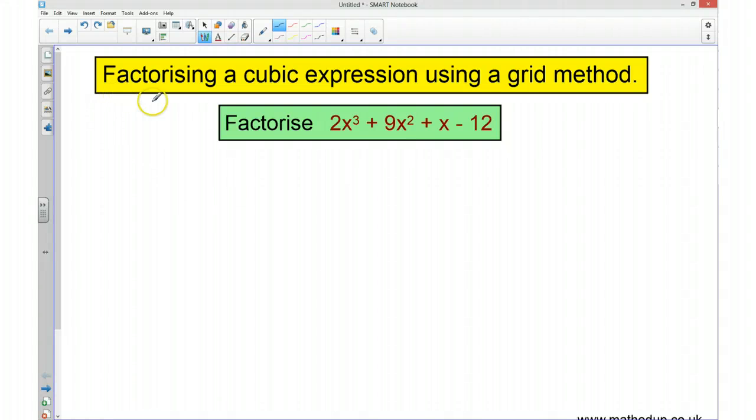Hi, this is a quick video on factorising a cubic expression using a grid method. We're going to have a look at factorising 2x cubed plus 9x squared plus x take away 12.